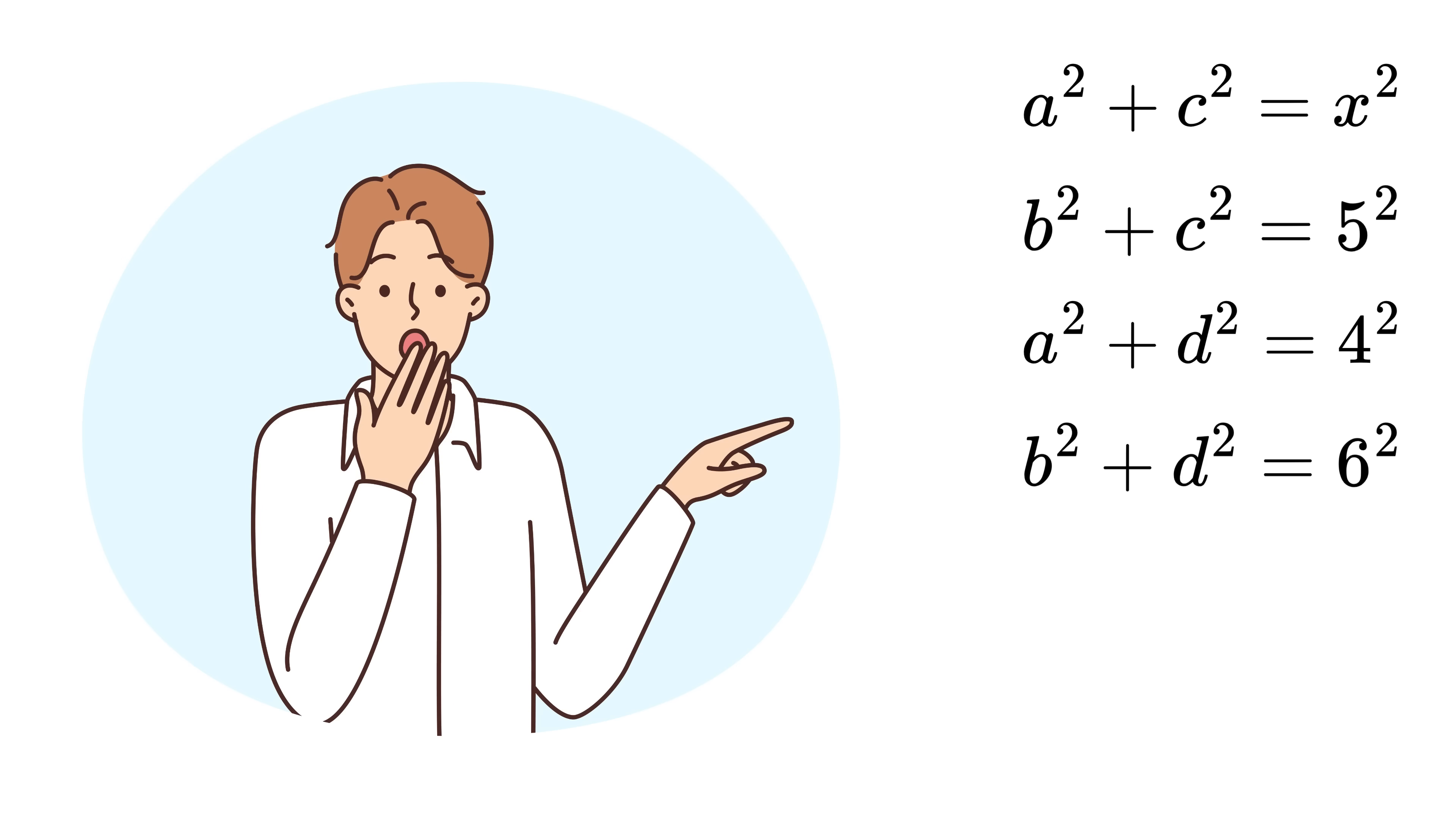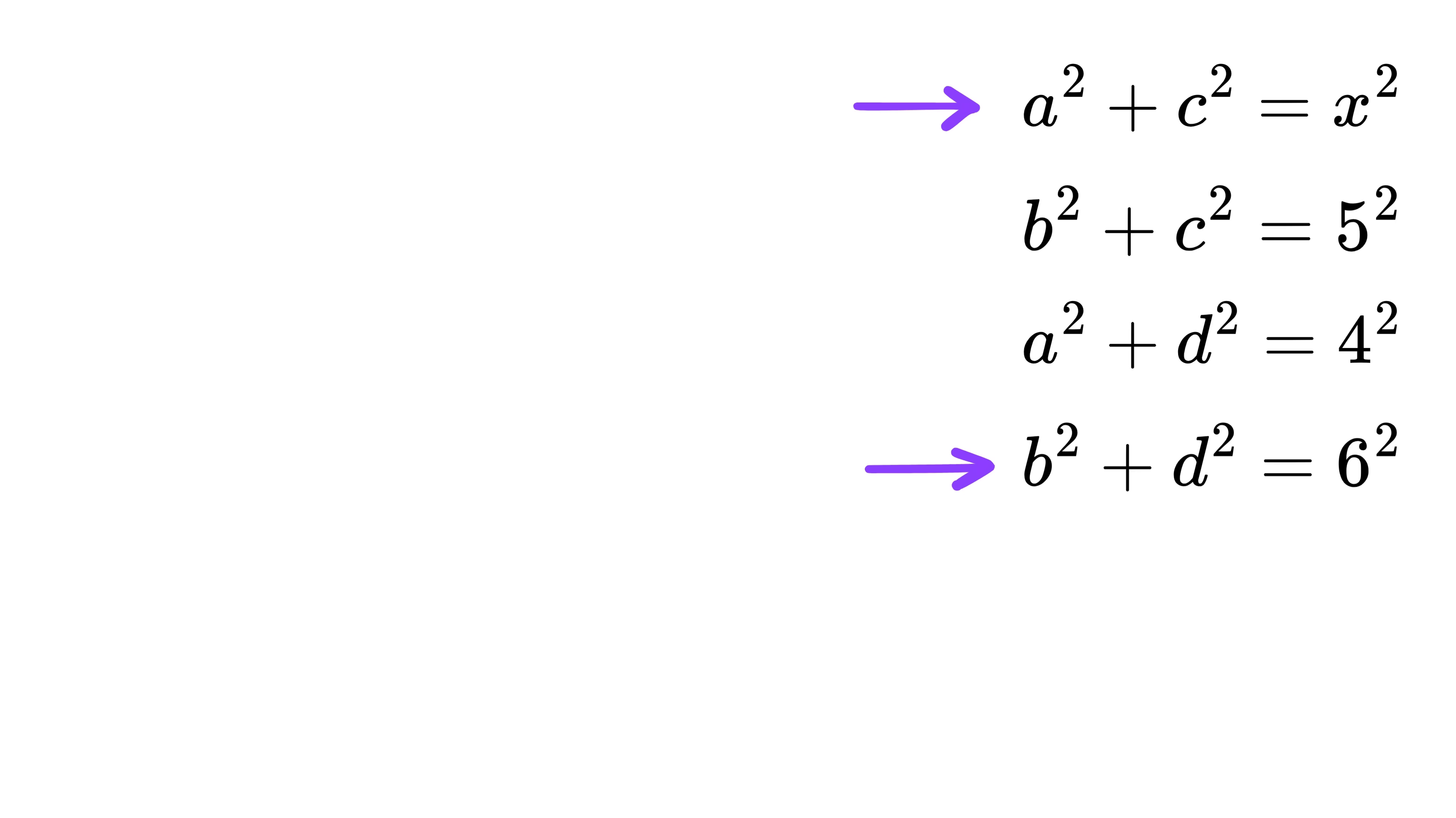Are you now ready for the eureka moment? Add this first and this fourth equation with each other. We get A square plus B square plus C square plus D square equals X square plus 6 square.